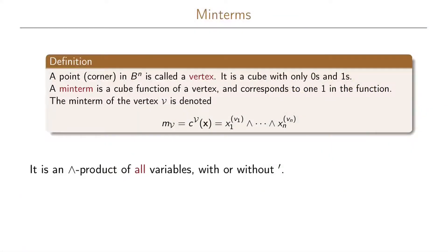We define a min term as follows. A point or a corner in the n-dimensional boolean space is called a vertex. This is a cube with only zeros and ones. A min term is a cube function of a vertex and corresponds to a one in the function. The min term of vertex v is denoted as m sub v, which is the cube function consisting of the literal exponents x1 to the v1, x2 to the v2, up to xn to the vn. Since this is a vertex in our boolean space, v1, v2, up to vn will always be either 0 or 1.